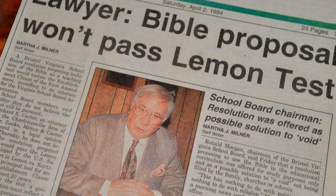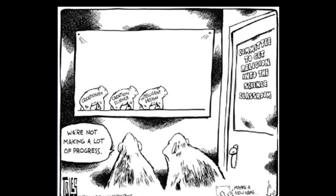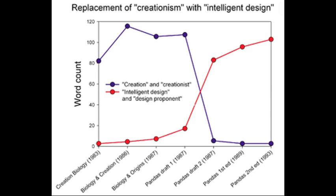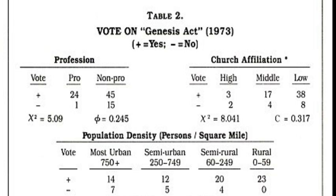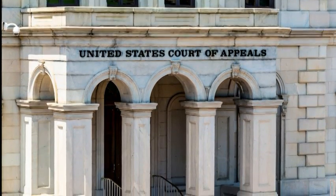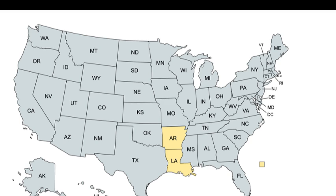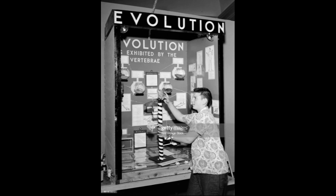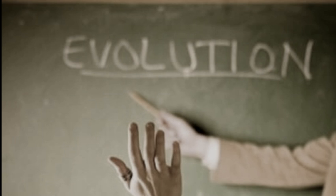Conservatives responded by calling for the teaching of alternative evolution theories for the sake of balance. The alternatives became biblical creationism, creation science, and intelligent design — each attempting to conceal their religious basis to survive court scrutiny. In 1973, Tennessee became the first state to require equal emphasis on the Bible's Genesis story alongside other theories of human origins, but two years later that law was struck down as unconstitutional. Arkansas's and Louisiana's Balanced Treatment Acts were similarly found unconstitutional in the 1980s, after which more evolutionary biology was taught unhindered in public classrooms.